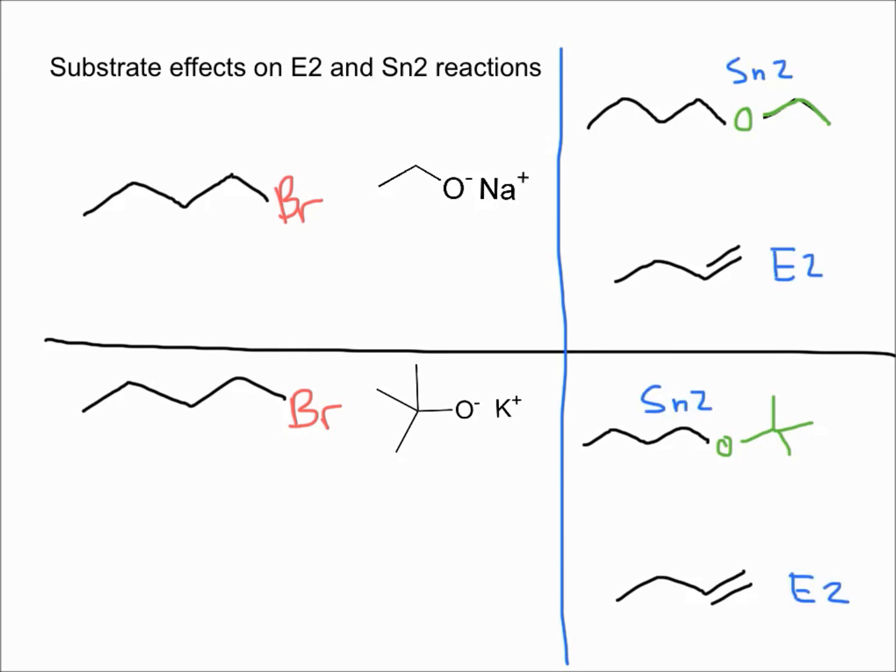The molecule on the top of both sections would be the molecule that underwent the SN2 reaction. The one on the bottom with the pi bond would be the one that underwent the E2 reaction.